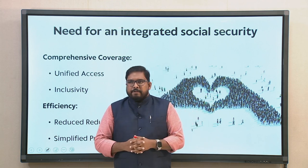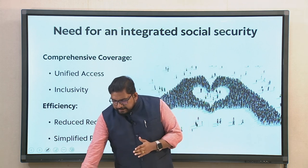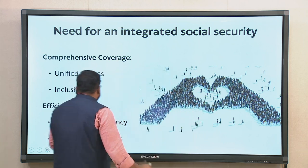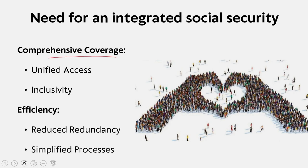We need comprehensive coverage and a situation where there is unified access and inclusivity. When looking into comprehensive coverage, an integrated system ensures that all individuals have access to various social security benefits—unified access is critical. All the schemes should include various groups, especially vulnerable groups who might otherwise fall through the cracks of this fragmented system. Unified access and inclusivity are relevant when you talk about comprehensive coverage.